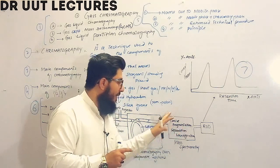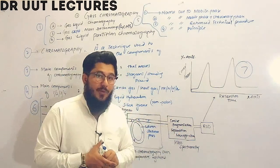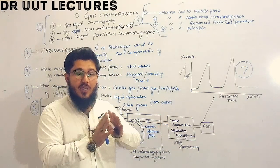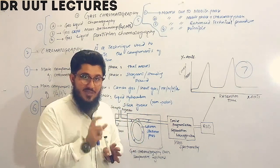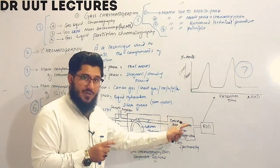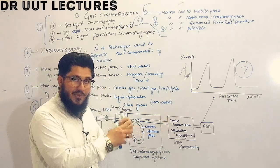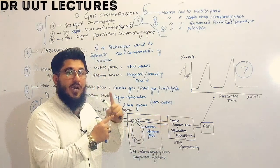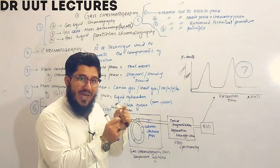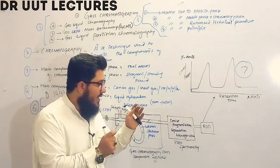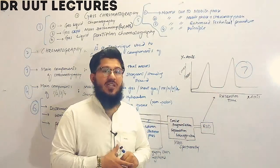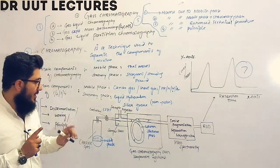The separated components then enter the detector. In GCMS, the mass spectrometer ionizes, fragments, and separates the sample, then identifies each component. The signal obtained is directed toward the readout device, which provides a graphical representation of the results.